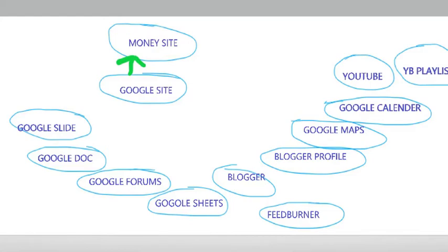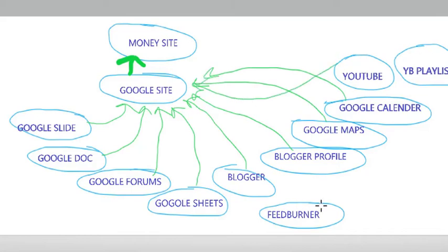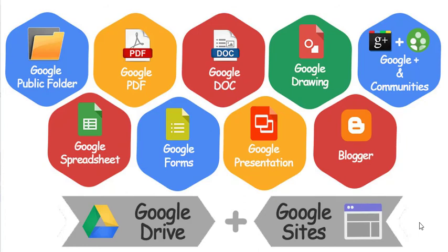I usually point backlinks to money sites from Google Sites, and other Google properties point to that Google Site. It's a simple and safer gstack suite blueprint. You can create your own — I highly recommend testing new strategies and sharing the results with our community. Now let's see how to make the gstack suite work for us.